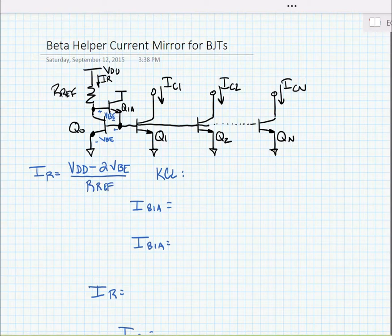We have 2 VBE at the bottom of the reference resistor, and now we can write KCL at the reference node.